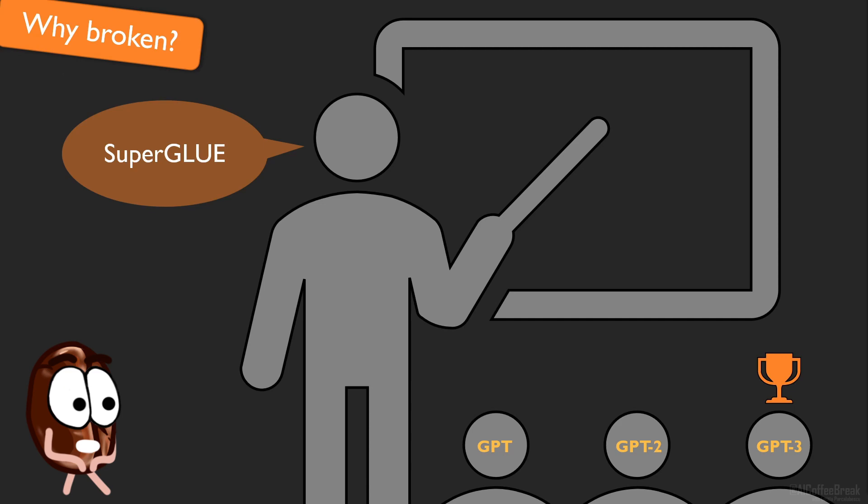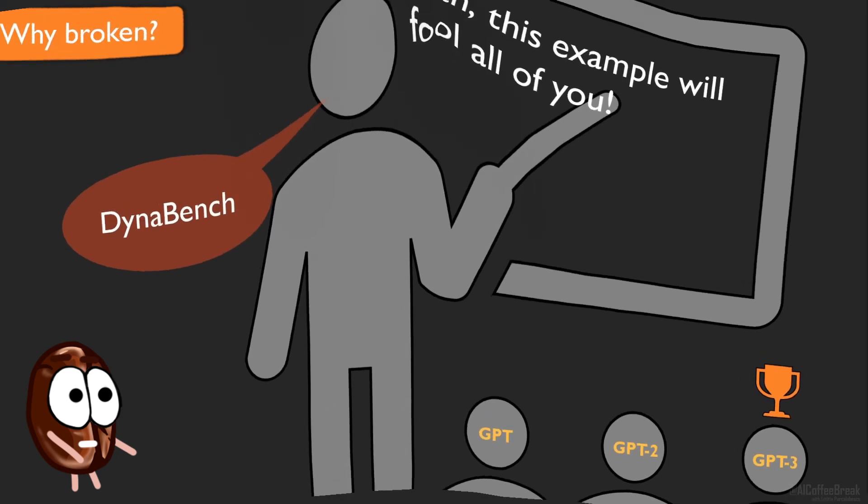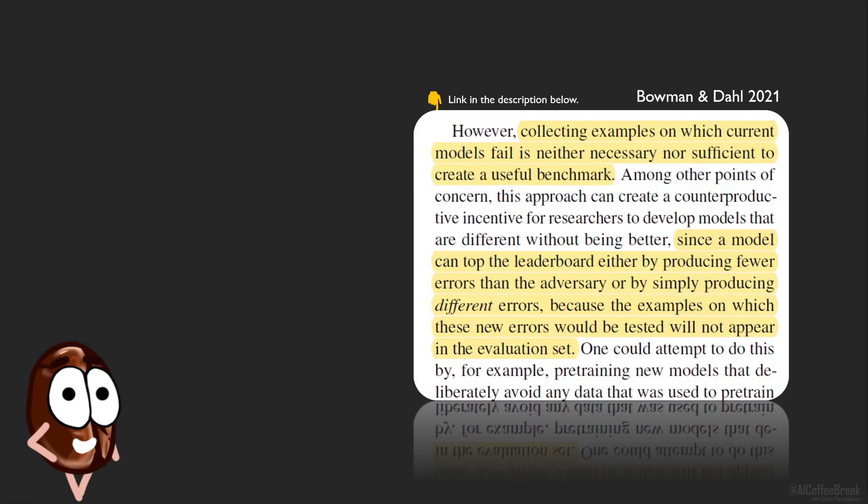Anyway, to counter the problems of usual benchmarks, where models are exploiting dataset biases and spurious correlations left in there, like when an answer is correlated with a specific word, benchmarks like DynaBench are going away from the classical IID benchmark and go into adversarial mode by asking human annotators to try to fool models. But as the authors of this paper highlight, adversarially constructed benchmarks will produce challenging examples.